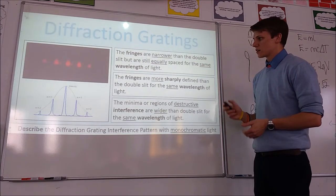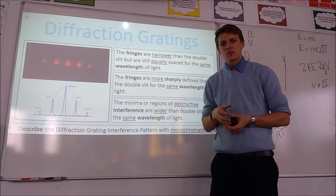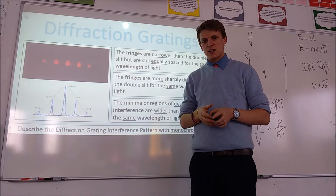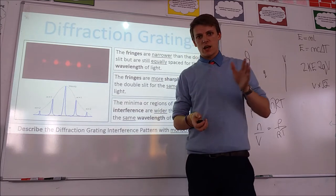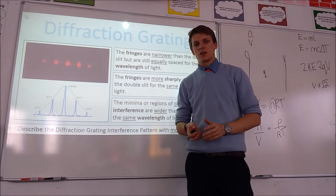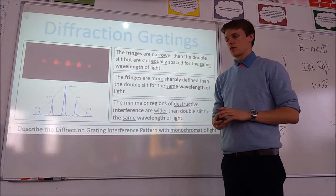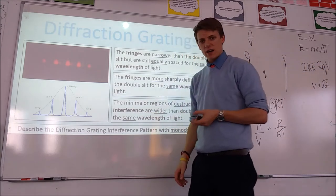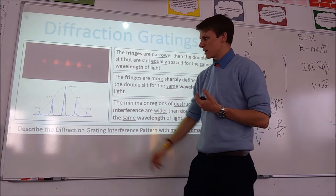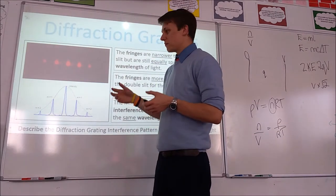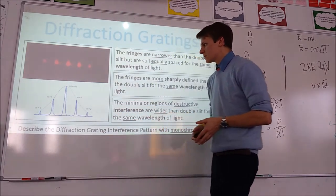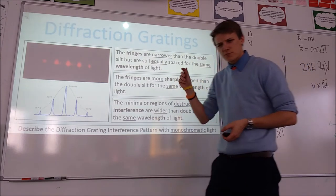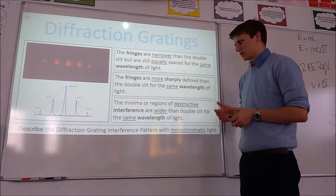Diffraction gratings are essentially just a piece of material where you cut lots of slits really close together. So instead of just two slits, we have hundreds of slits in a row. And that changes the interference pattern. What you get is narrow fringes. If you look back at the interference pattern for a double-slit, those fringes were much wider and fuzzier. The fringes from a diffraction grating are much narrower and much sharper — not blurry at the edges, really sharp and crystal clear.